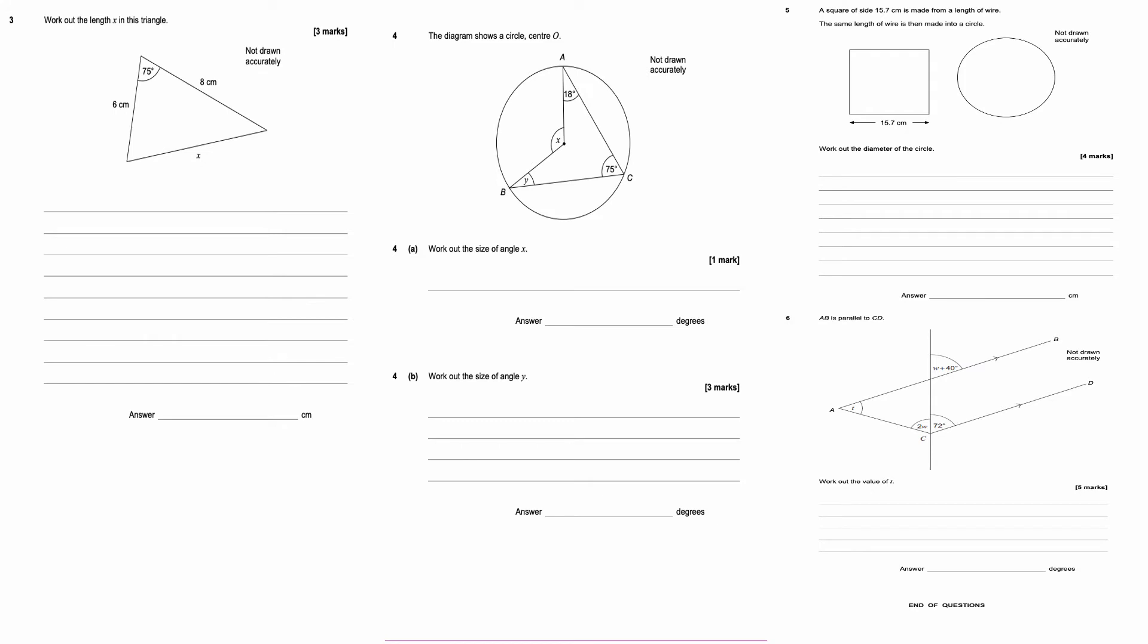This is question number three. Work out the length of x in this triangle. So this is using the cosine rule. The cosine rule is x squared equals 6 squared plus 8 squared minus 2 lots of 6 and 8, so 2 times 6 times 8 times cos of my angle, so times cos 75. I may have to do this as 2 separate sums here, just be careful. What I can do is just simplify. That's going to be 36 plus 64 is 100, so it's 100 take away 2 times 6 is 12, times 8 is 96, times cos 75.